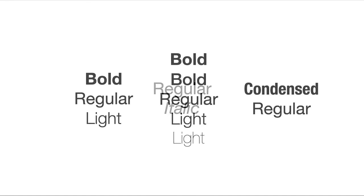Grundsätzlich gibt es die Möglichkeit, eine Schrift schrägzustellen — das nennt man Italic. Die anderen Schriften sind sehr regular. Dann gibt es verschiedene Schriftschnitte, sozusagen dick und dünn oder Light und Bold, und die gibt es oft in verschiedenen Abstufungen. Es gibt dann auch noch die Schriften, die etwas gedrungener zusammengesetzt sind, die sogenannten Condensed-Schriften.